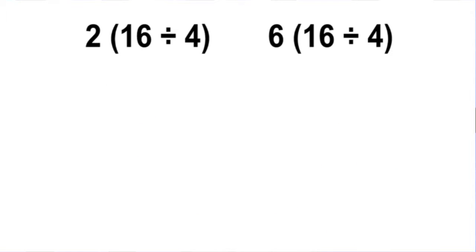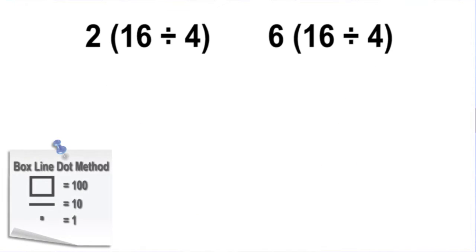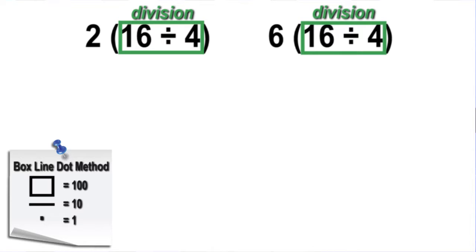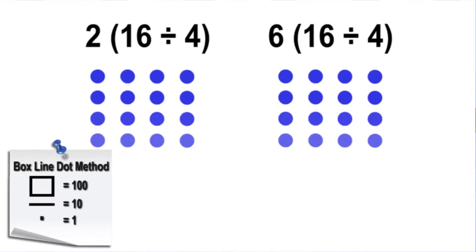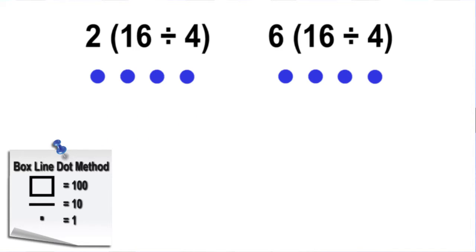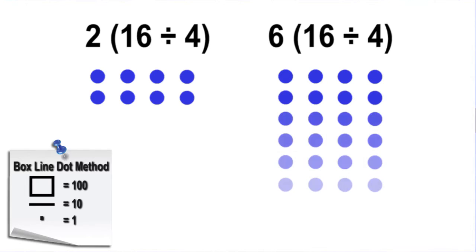Now let's visually represent these same expressions using the box line dot method: 16 divided by 4 multiplied by 2, and 16 divided by 4 multiplied by 6. Both expressions will begin by dividing 16 by 4. Place 16 dots below each expression in rows of 4, then keep only one row of 4. The first expression needs to have 2 rows of 4, and the second expression needs to have 6 rows of 4.